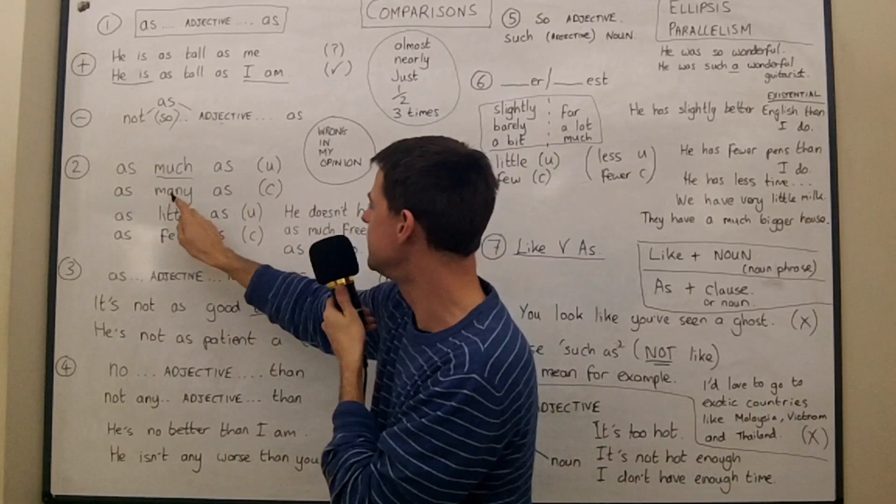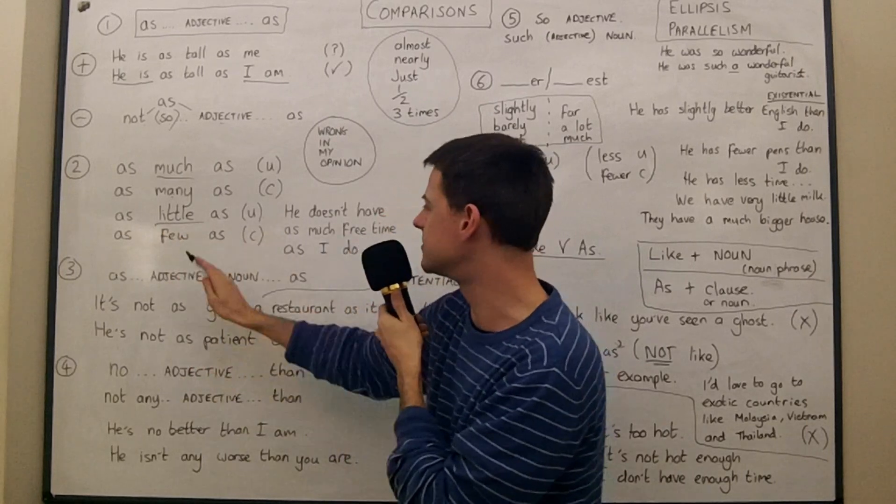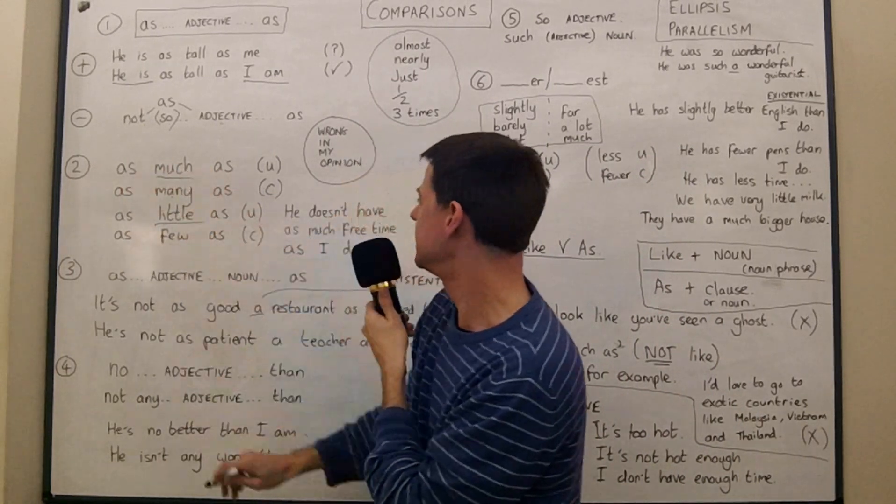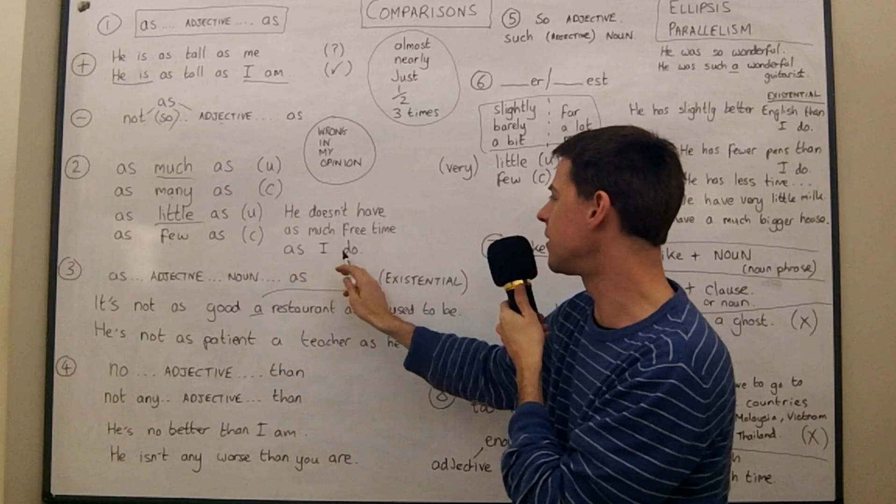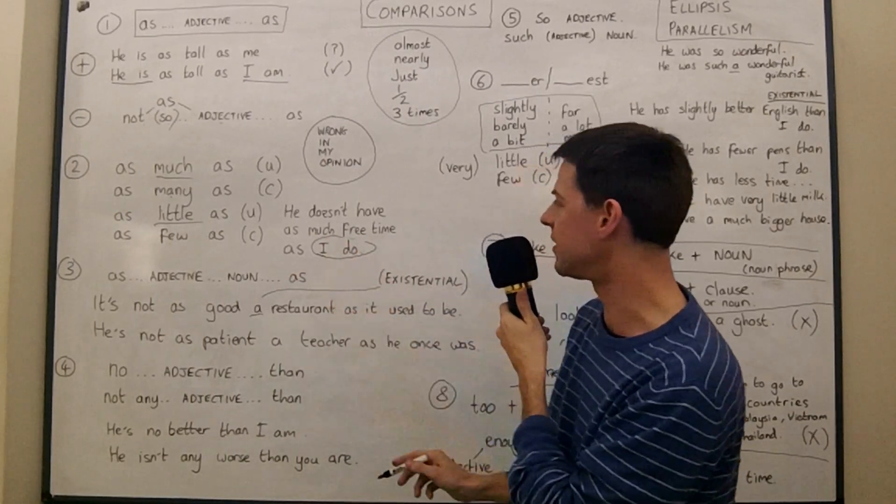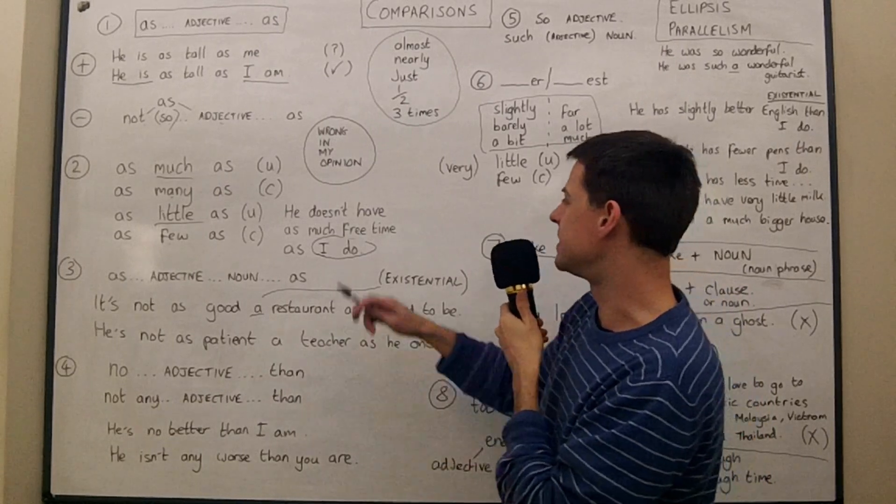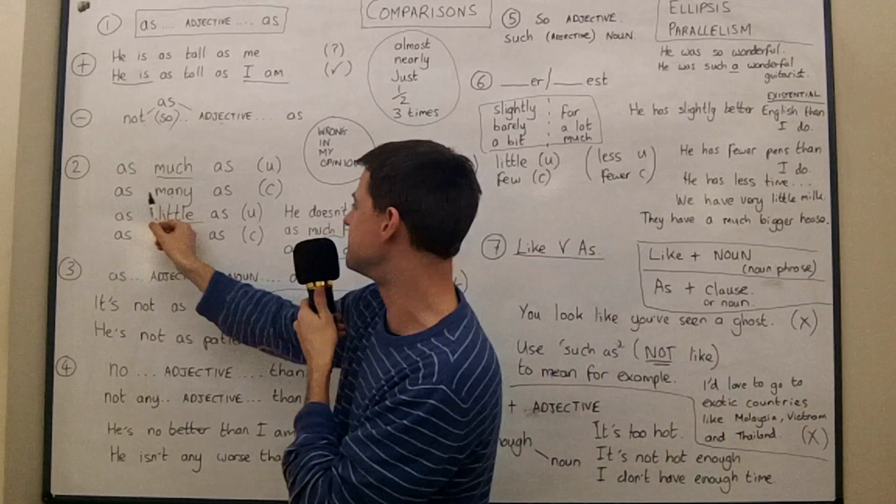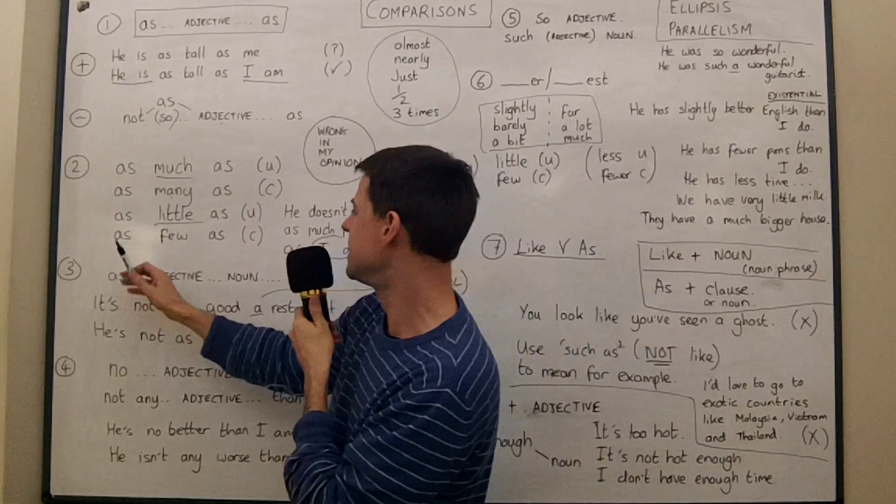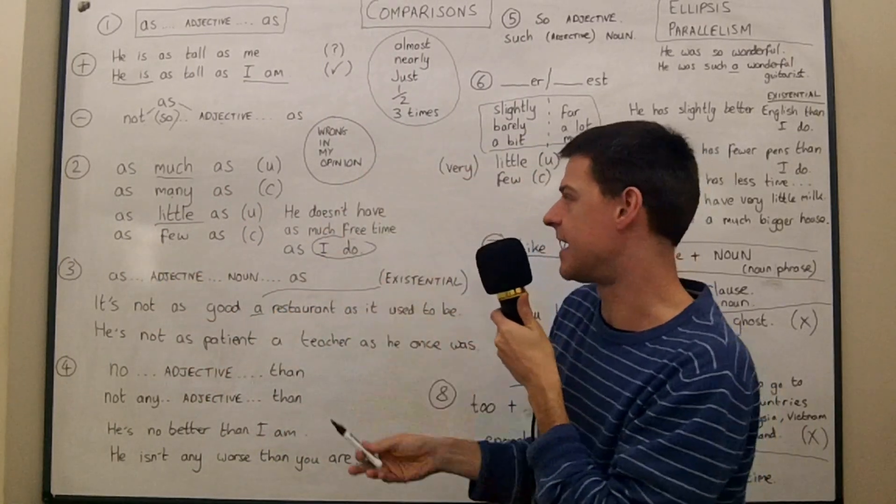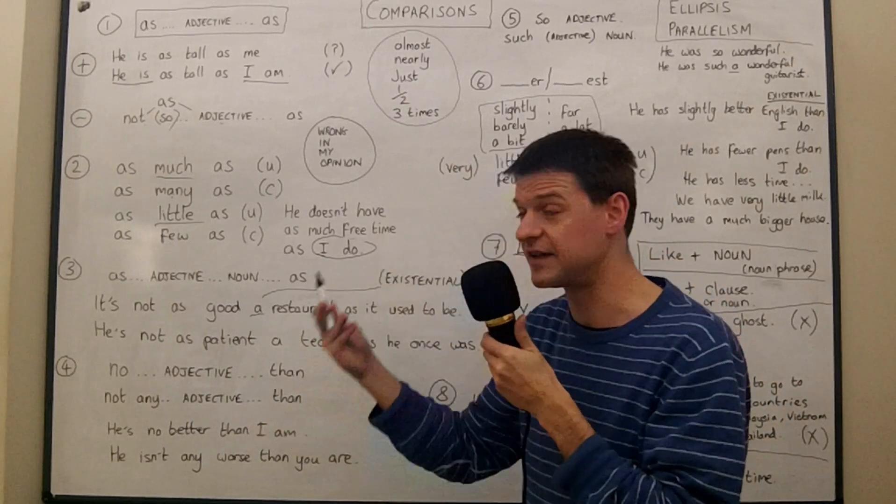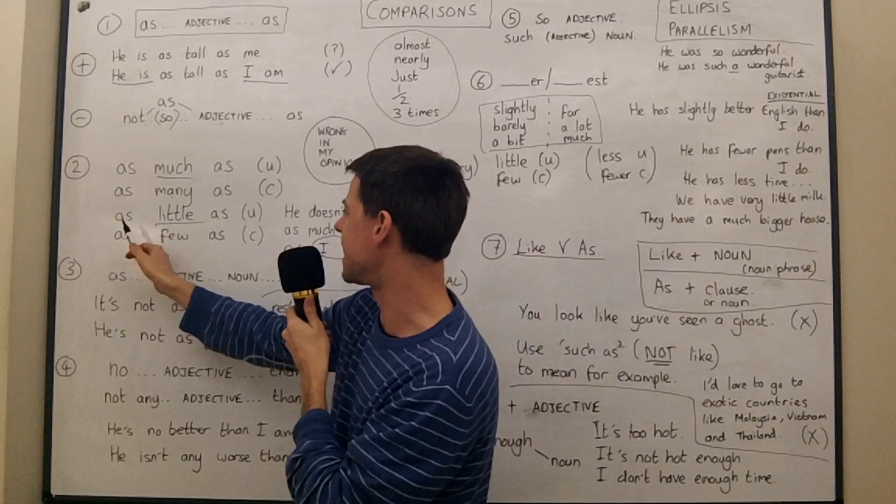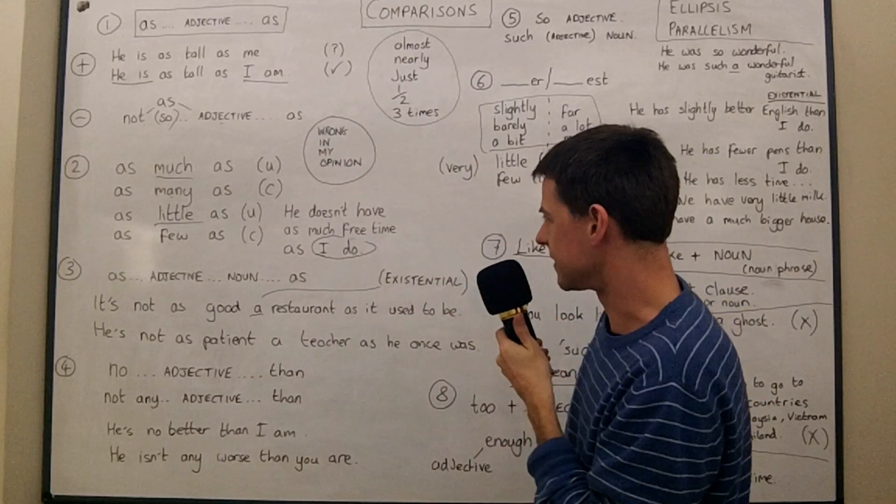So we use much with uncountable, many with countable. We use little with uncountable and few with countable. So we use these for comparing quantities. He doesn't have as much free time as I do. And notice I haven't put as me. I've put as I do again because I'm thinking about parallelism. So he doesn't have as much free time as I do. Or we could say he doesn't have as many friends as I do. Or he doesn't have as few pens as I have. It's easy to make that mistake. And he doesn't have as little energy as I do or something like that.